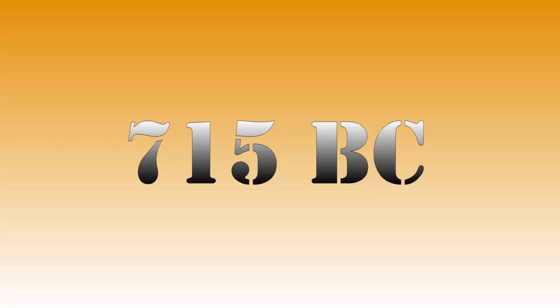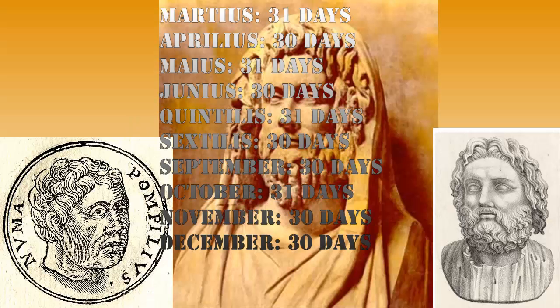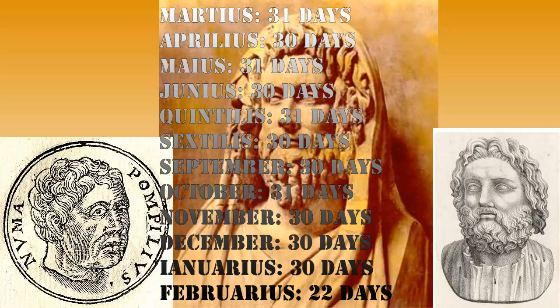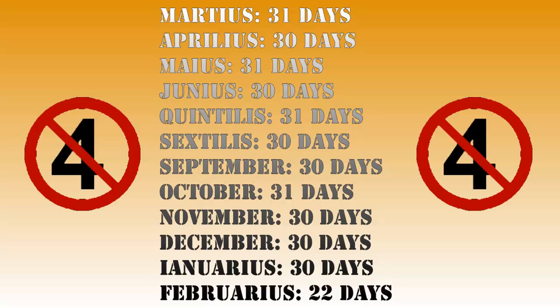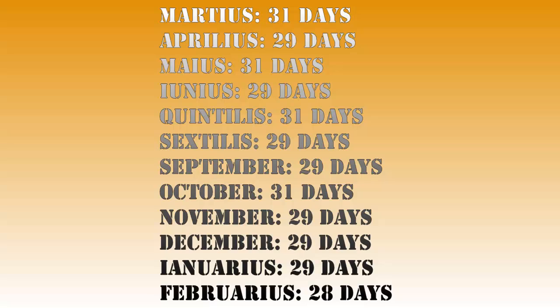Around 715 BC, King Numa Pompilius added two months to the end of the year, making the calendar have 12 months. This made the total days in the calendar 355, the number he thought would make the year complete. The days in February were just used to get to the correct amount. The Romans believed that even numbers were unlucky, so King Numa adjusted the calendar to make all the months have an odd number of days. However, since we have an even number of months and an odd number of days to fill, one of the months had to be even. It seemed logical that February, being the last on the list, got to be the even month.